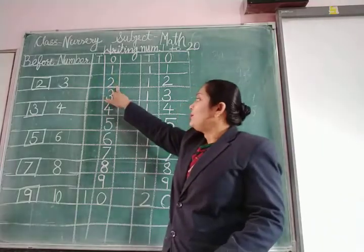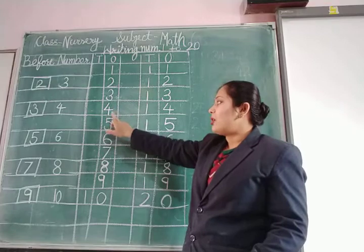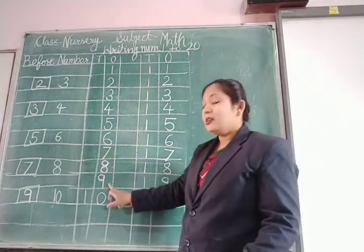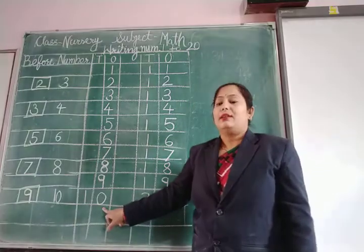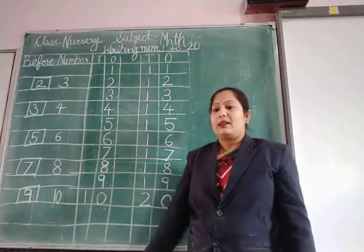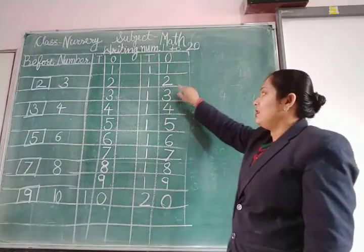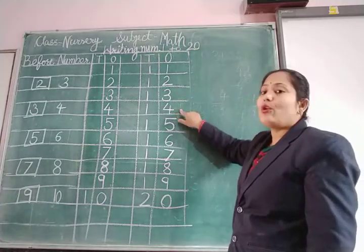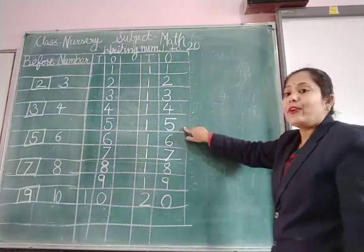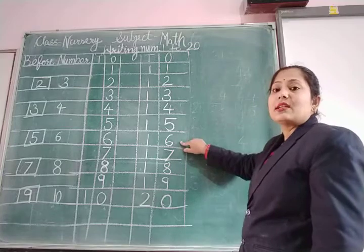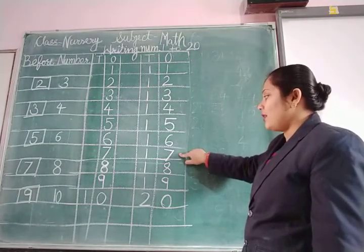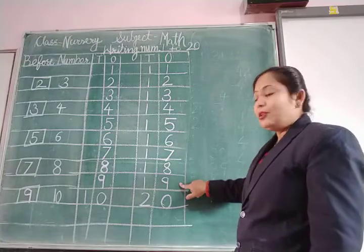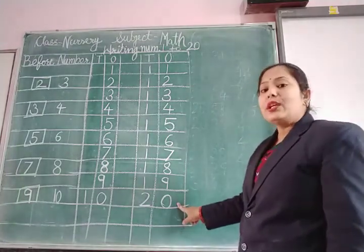1, 2, 3, 4, 5, 6, 7, 8, 9, 10. 11, 12, 13, 14, 15, 16, 17, 18, 19, 20.